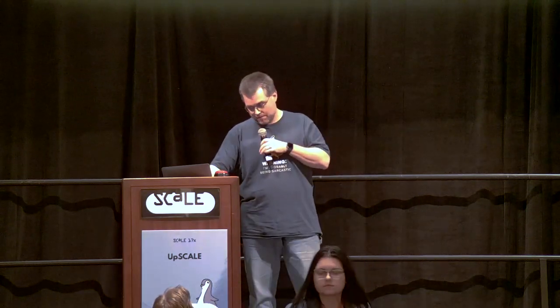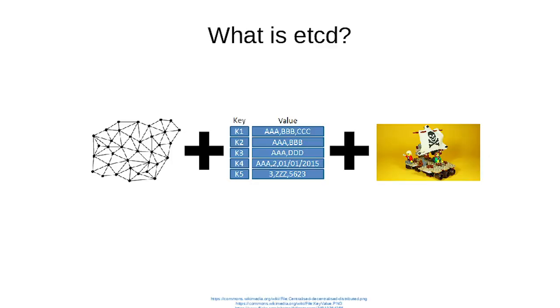But first we should talk about what etcd is. According to the website, etcd is a distributed key-value store that provides a reliable way to store data across a cluster of machines. It's open source and available on GitHub. etcd gracefully handles leader elections during network partitions, tolerates machine failure including the leader, communication happens over Raft consensus, yada yada yada.